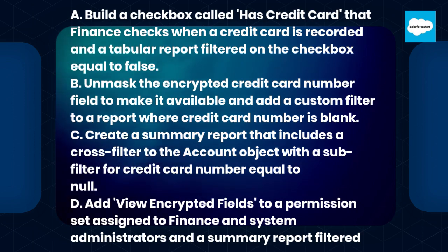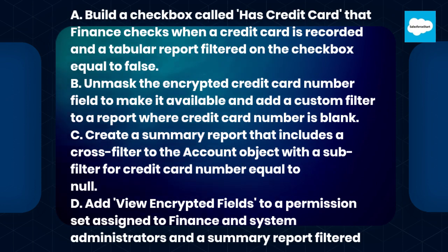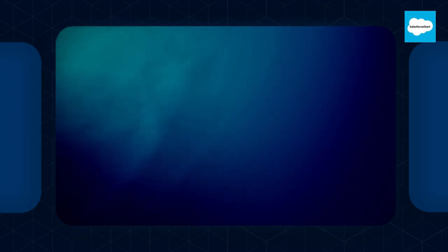C. Create a summary report that includes a cross filter to the account object with a sub filter for credit card number equal to null. D. Add view encrypted fields to a permission set assigned to finance and system administrators and a summary report filtered by credit card number.